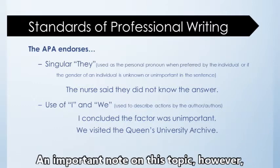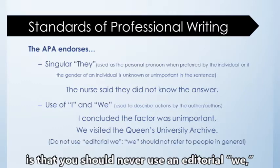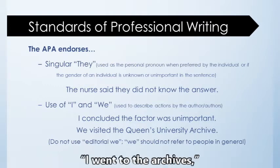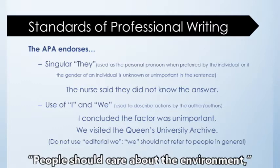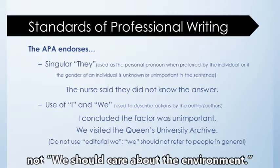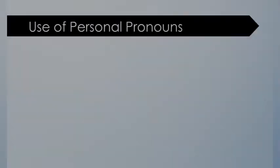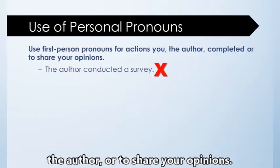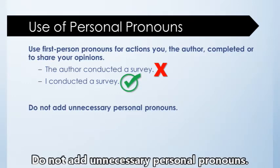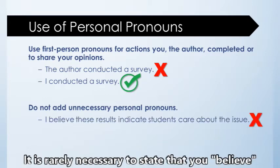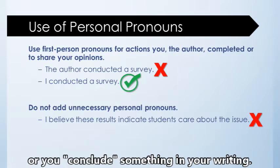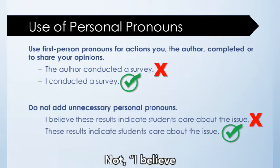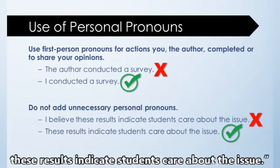An important note on this topic, however, is that you should never use an editorial 'we,' which is when 'we' is used to refer to all people or people in general. You would say 'I went to the archives,' but 'people should care about the environment,' not 'we should care about the environment.' Remember, this change is meant to allow you to directly state the actions undertaken by you, the author, or to share your opinions. Do not add unnecessary personal pronouns. It's rarely necessary to state that you believe or conclude something. You should still say 'these results indicate students care about the issue,' not 'I believe these results indicate students care about the issue.'